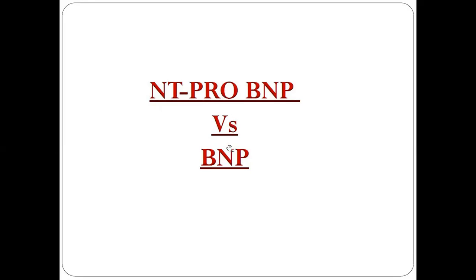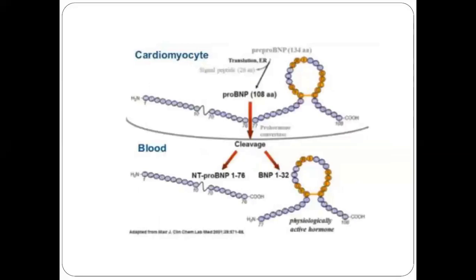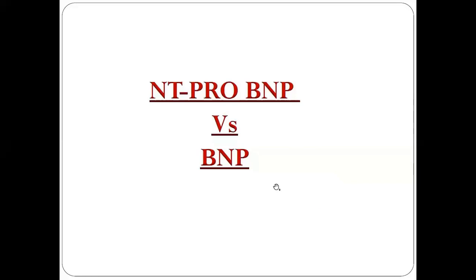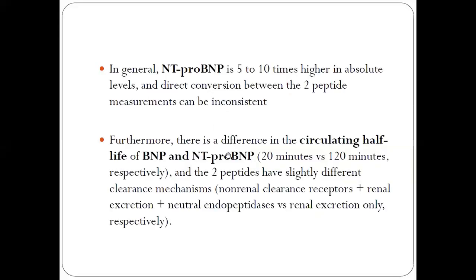NT-proBNP versus BNP — when to use each. NT-proBNP and BNP are the products of proBNP, released from the myocardium under high pressure. Pre-proBNP is formed first, which then becomes proBNP, and proBNP is then cleaved into NT-proBNP and BNP.